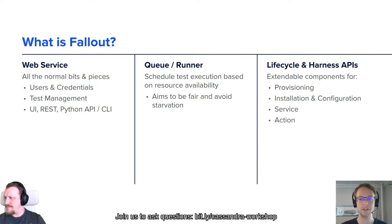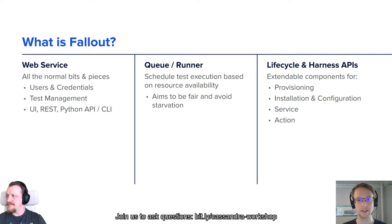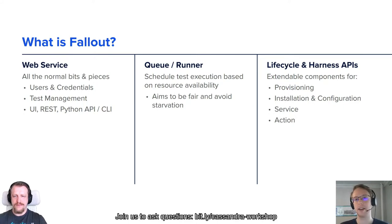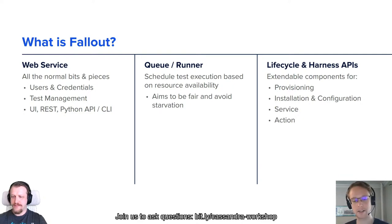Fallout is built out of three overarching components: the web service, a queue runner system which orchestrates and schedules the execution of tests based on resource availability, and a pair of APIs which enable us to wrap around any kind of system — whether you're provisioning virtual machines or Kubernetes — and any sort of software tool you might want to install across the distributed system.